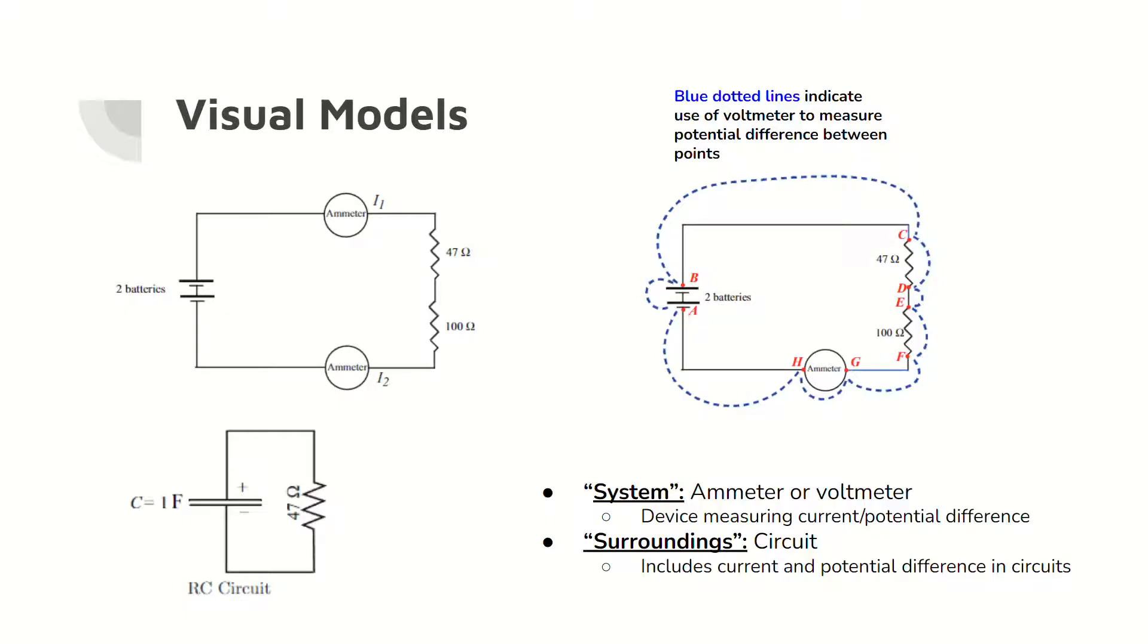Here are some visual models for the circuits that were created in this investigation. The system is the device measuring the current or potential difference and the surroundings is the circuit being measured.